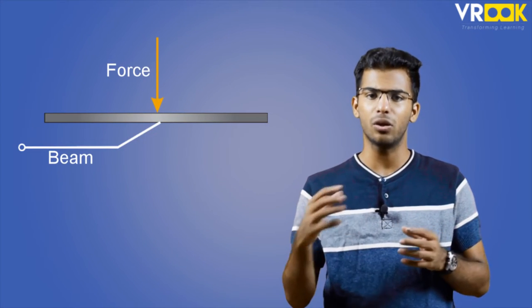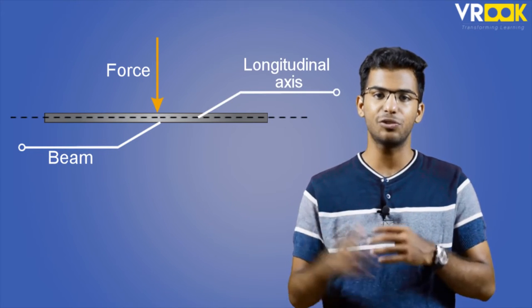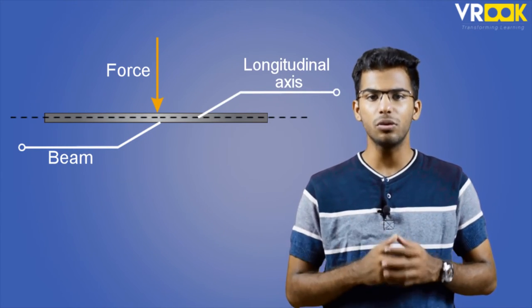In this video let us learn about the types of loads. The beams are used to resist the loads acting on them which are perpendicular to their longitudinal axis as we see here. Based on this we have three types of loads.